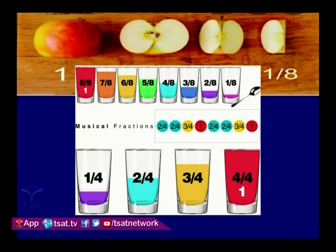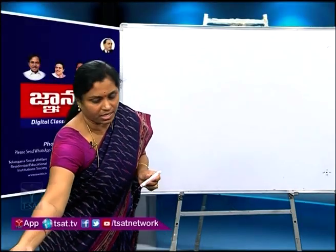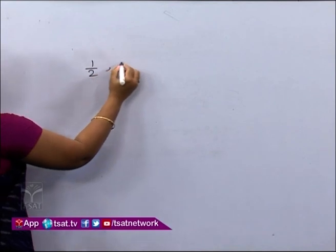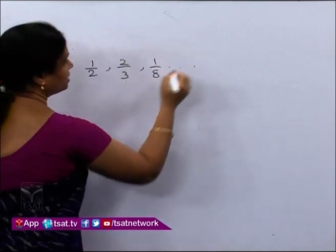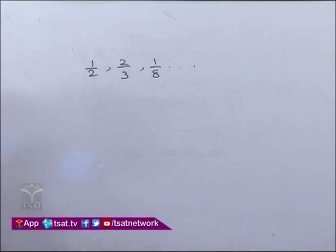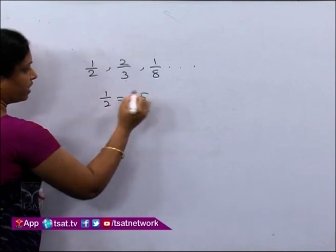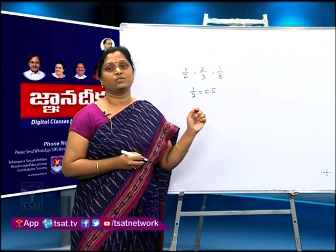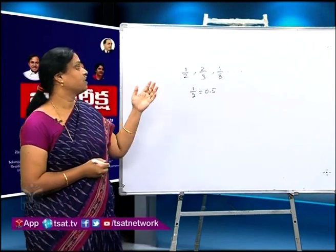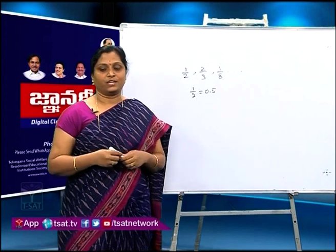You can see the glasses also. There are some glasses with colored water in some portion. One is full of water and others show some portions. So what are these numbers? These are 1/2, 2/3, 1/8. What are these? These are fractions. As you know, these are fractions. 1/2 can be written as 0.5. This is named as decimals. So the entire set of integers, fractions, and decimals are known as rational numbers.